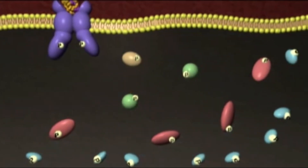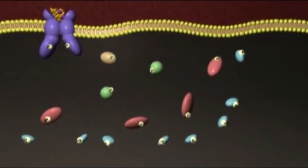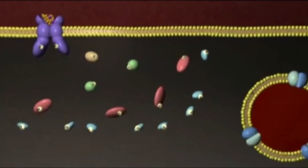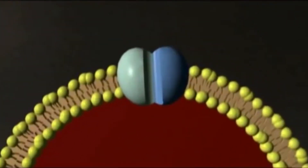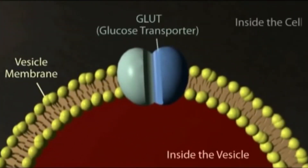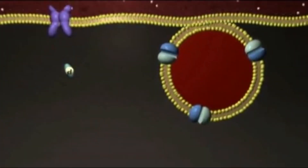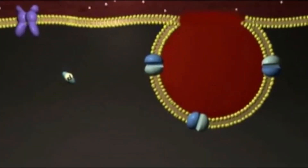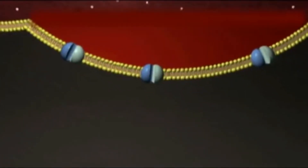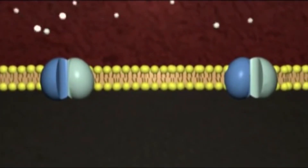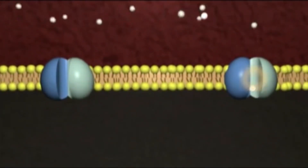The importance of the signal cascade is the movement of glucose transport proteins called GLUT. When these storage vesicles fuse with the cell membrane, the number of GLUT transporters on the cell surface increases, thus allowing glucose to enter into the cell.